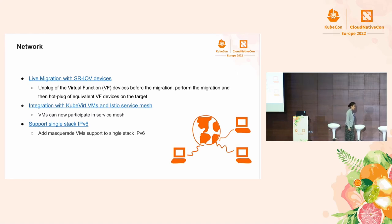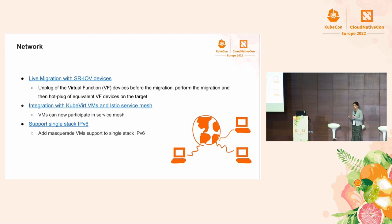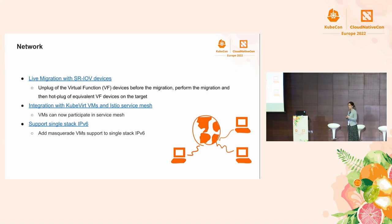We have another example of integration in the Kubernetes ecosystem. Istio is one of the very popular tools for service mesh. Today KubeVirt VMs can participate in service meshes, so for example you can inspect virtual machine network traffic using the Kiali dashboard. We also recently added support for single-stack IPv6, which is particularly needed if your cluster supports only IPv6.